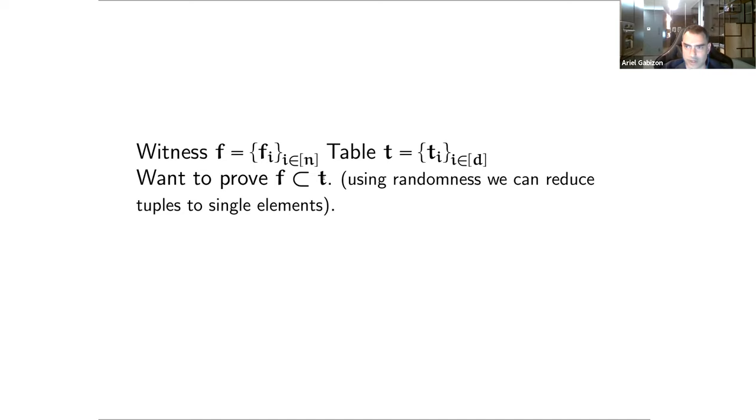Let me try to give you a short explanation of how lookup works. Our setting is we have some vector that we think of as the witness. We have some other vector that we think of as the table. And we want to prove that F is contained in T, meaning that every value in just the set, not multi-set sense, meaning that every value that appears in F also appears in T. Just a tiny remark - we were talking about lookup tables of tuples, but it's easy to go from the tuple case to the single element case by sort of random combinations.